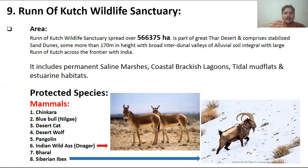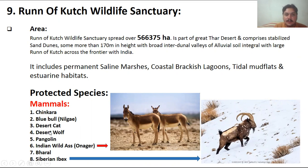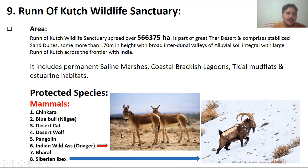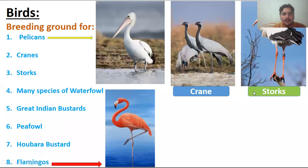The protected mammal species of the Rann of Kutch Wildlife Sanctuary include chinkara, blue bull, desert cats, desert wolf, pangolins, Indian foxes, onager, female wild asses, blue sheep, and Siberian ibex. These species are very much present in this desert area.